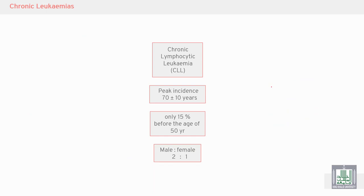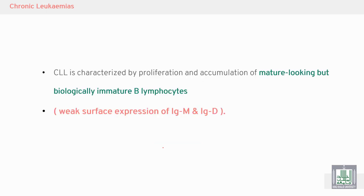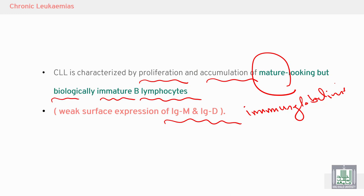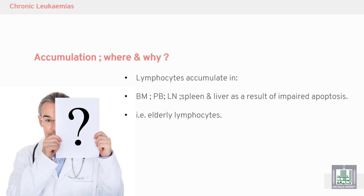CLL occurs predominantly in the elderly; only 15% of cases occur before age 50. It is more common in males than females. CLL is characterized by the proliferation and accumulation of mature-looking but biologically immature B lymphocytes. The normal function of B lymphocytes is the secretion of immunoglobulins — IgM, IgG, IgA, IgD, and IgE — but in CLL there is weak surface expression of these immunoglobulins.